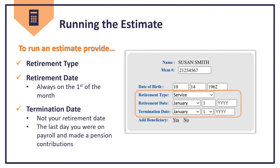Your name, membership number, and date of birth will be pre-populated at the top of the calculator. Select your retirement type from the drop-down menu, then enter the month and year of your proposed retirement date. Please note that all retirement dates are always the first of the month.